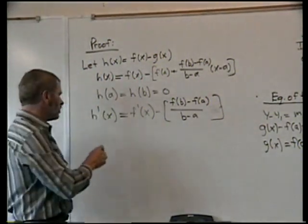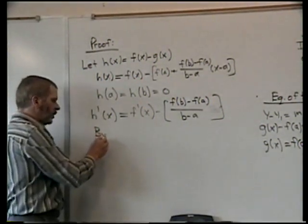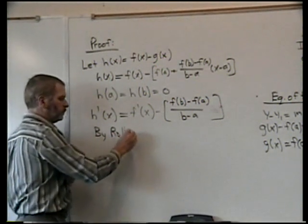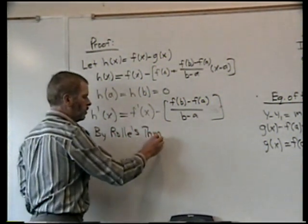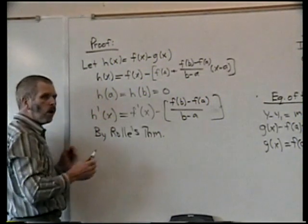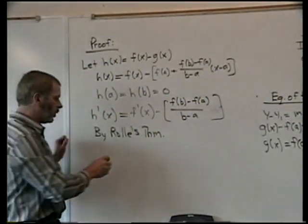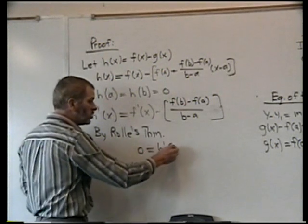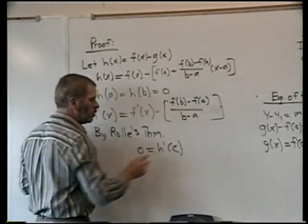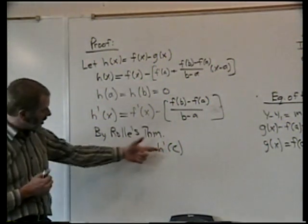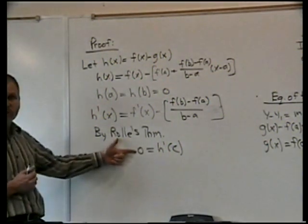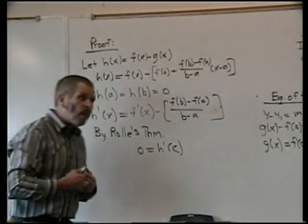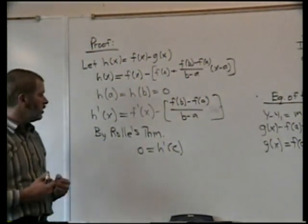Since Rolle's conditions have been satisfied, by Rolle's theorem, we know there is some value c in the interval between a and b such that h'(c) is zero. That's the c that we're actually looking for.